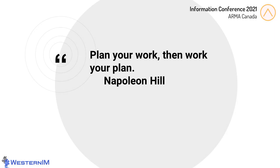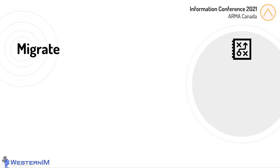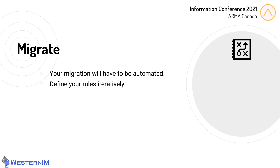Now that we have all of the planning done, it's time to do the actual migration. As Napoleon Hill said, plan your work, then work your plan. You might be migrating to a completely new system, or you might be just restructuring your files within your existing share drive. Either way, migration is going to have to be an automated process — it's unrealistic to expect that you are going to be able to migrate a reasonably sized shared drive with manual processes. An automated process implies that you need to have rules to tell the computer how to move files from one place to another, and you probably want to take an iterative approach to defining those rules rather than trying to completely specify the entire process in one go.